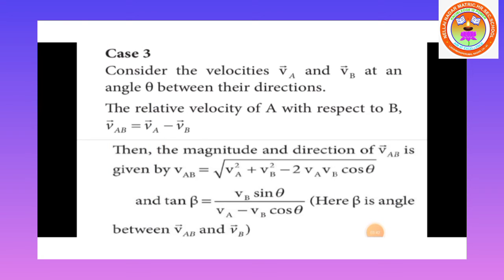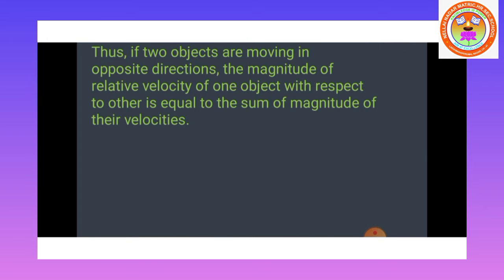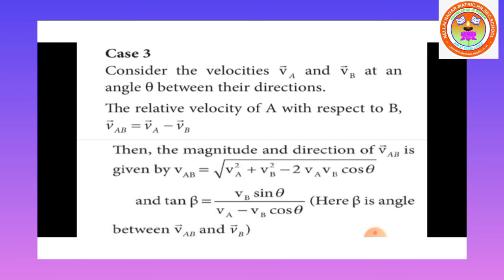Case 3: Consider velocities vA and vB at an angle theta between their directions. The relative velocity of object A with respect to object B is vAB = vA − vB. The magnitude is: |vAB| = √(vA² + vB² − 2·vA·vB·cosθ). The direction angle beta is given by: tan β = (vB·sinθ) / (vA − vB·cosθ), where beta is the angle between vAB and vB.